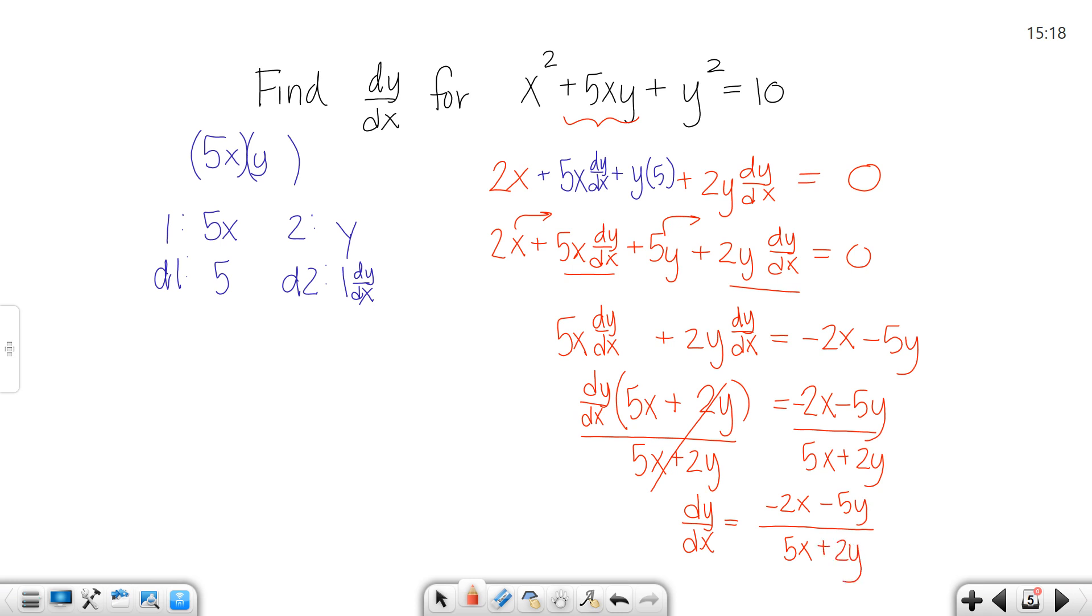Now you would think that those would simplify but they don't because you have a negative 2x and then you have a 5x on the bottom. They're not the same. Be careful. You will have to use the product rule a good bit. Now that one was kind of tough. Let's try another one.